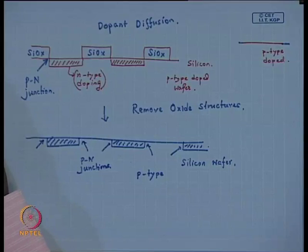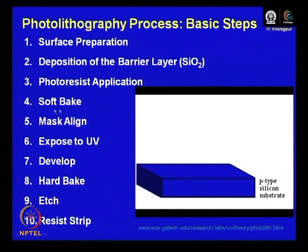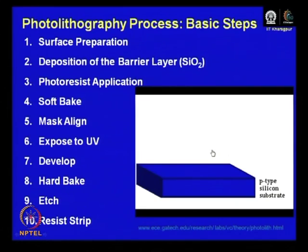Let us now go back to the movie sequence we have been showing from the beginning to see whether you understand all the steps. You start with a P-type silicon wafer substrate, deposit the barrier or oxide layer, apply the photoresist by spin coating, do a soft bake to remove the solvent, make a mask and align it using the exposure mechanism, then expose it to UV, followed by development, hard bake, etching, resist strip or ashing, and then the dopant diffusion reaction.